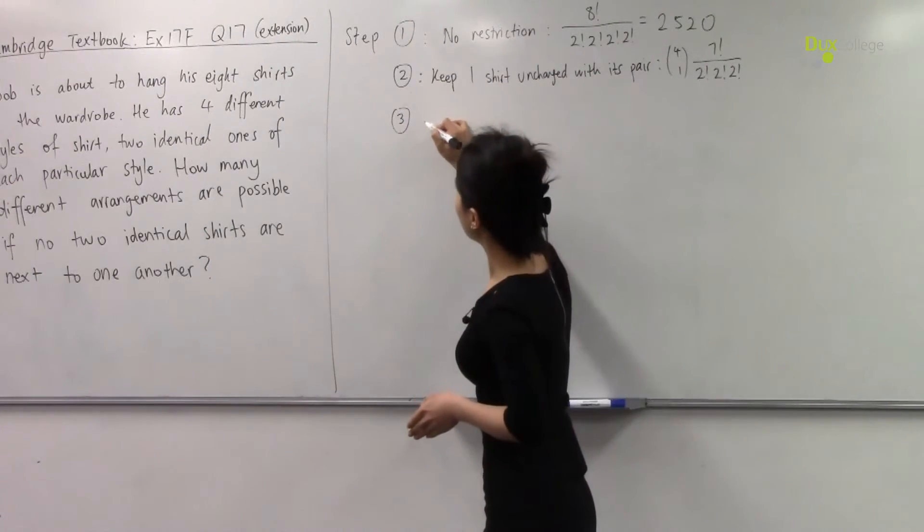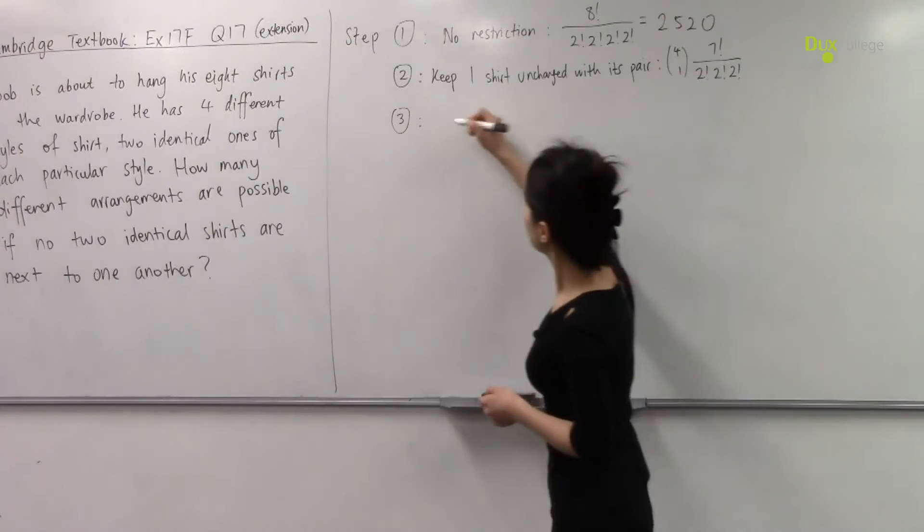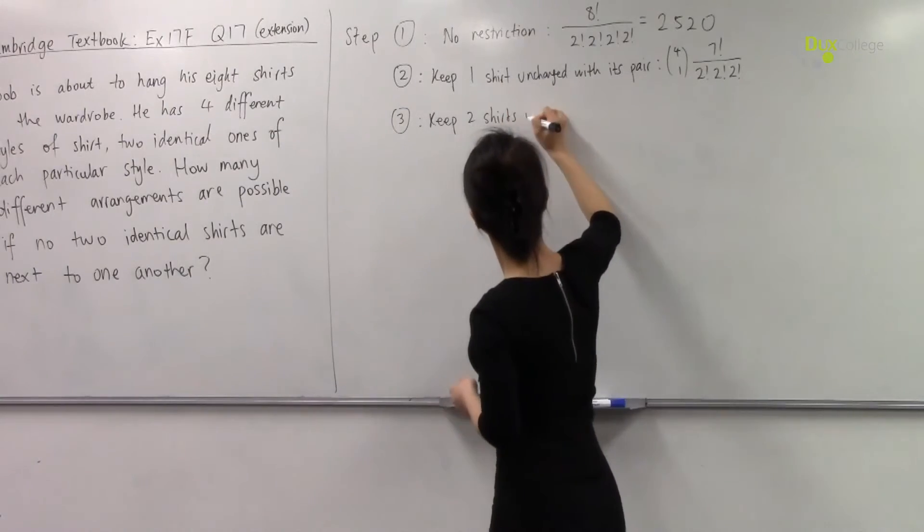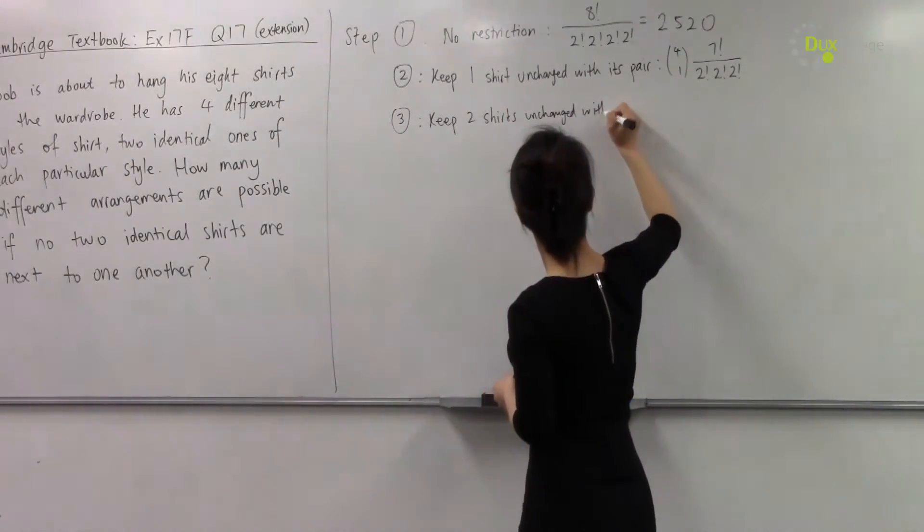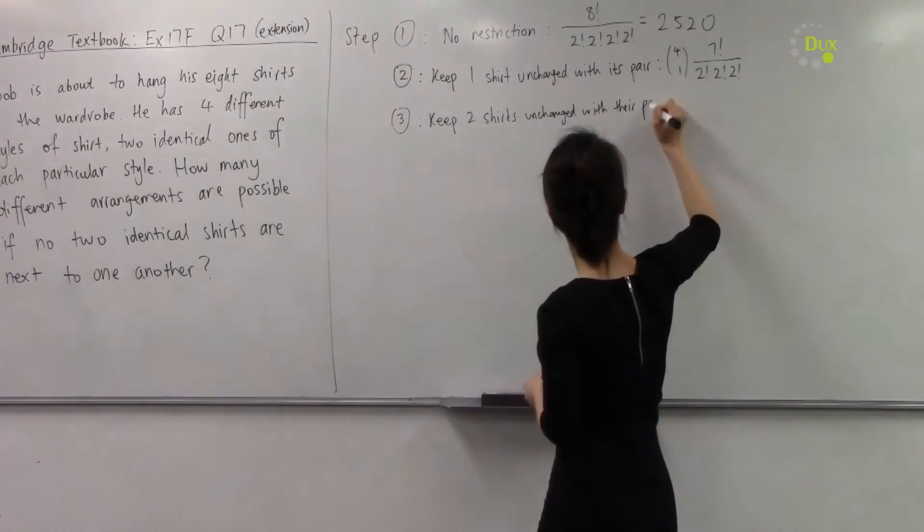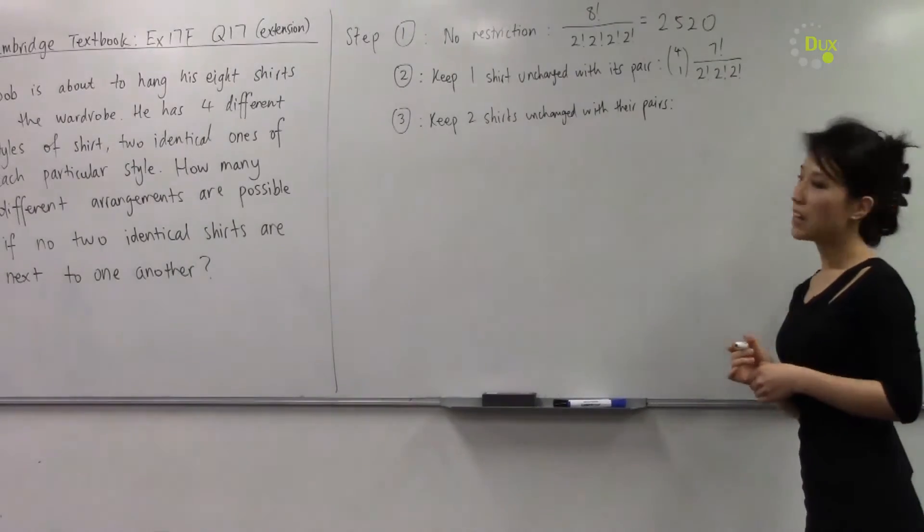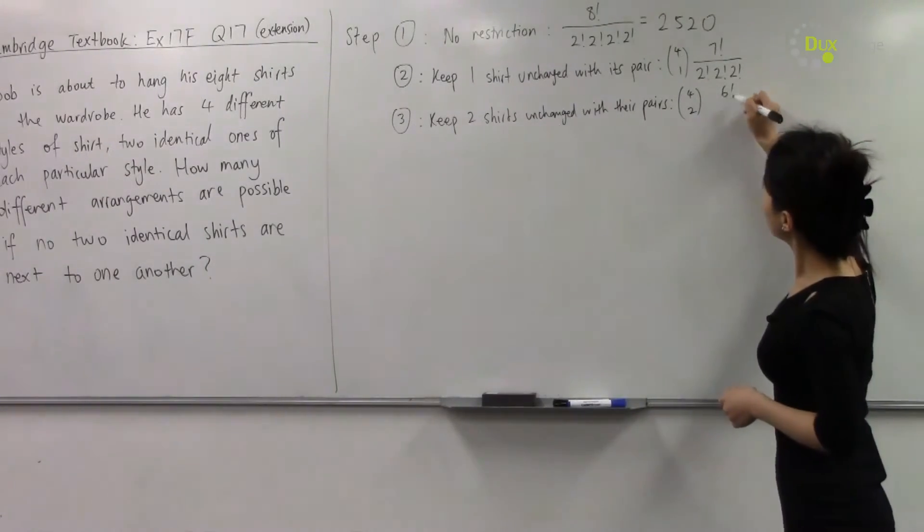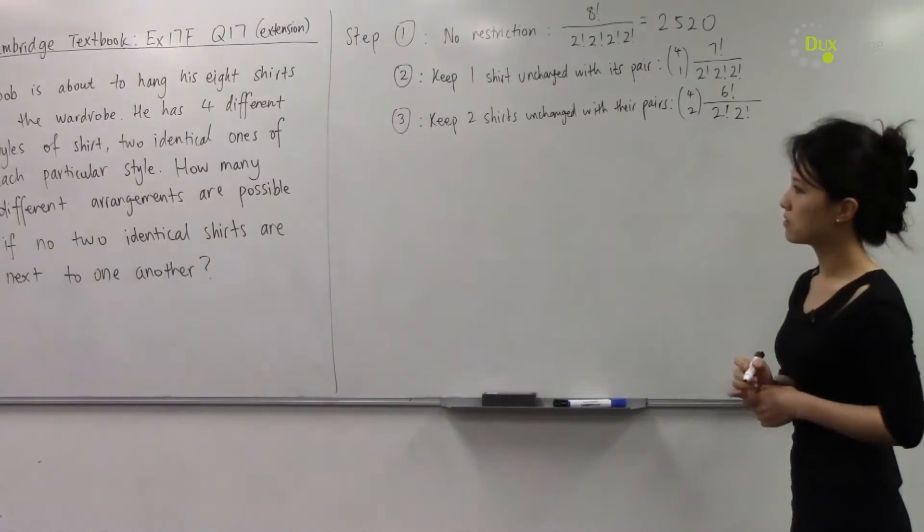Now step number three is to keep two shirts unchanged with their pairs. So out of four pairs, let's choose two pairs. And we are arranging six items in a row, and then we have to divide it by the two identical pairs.